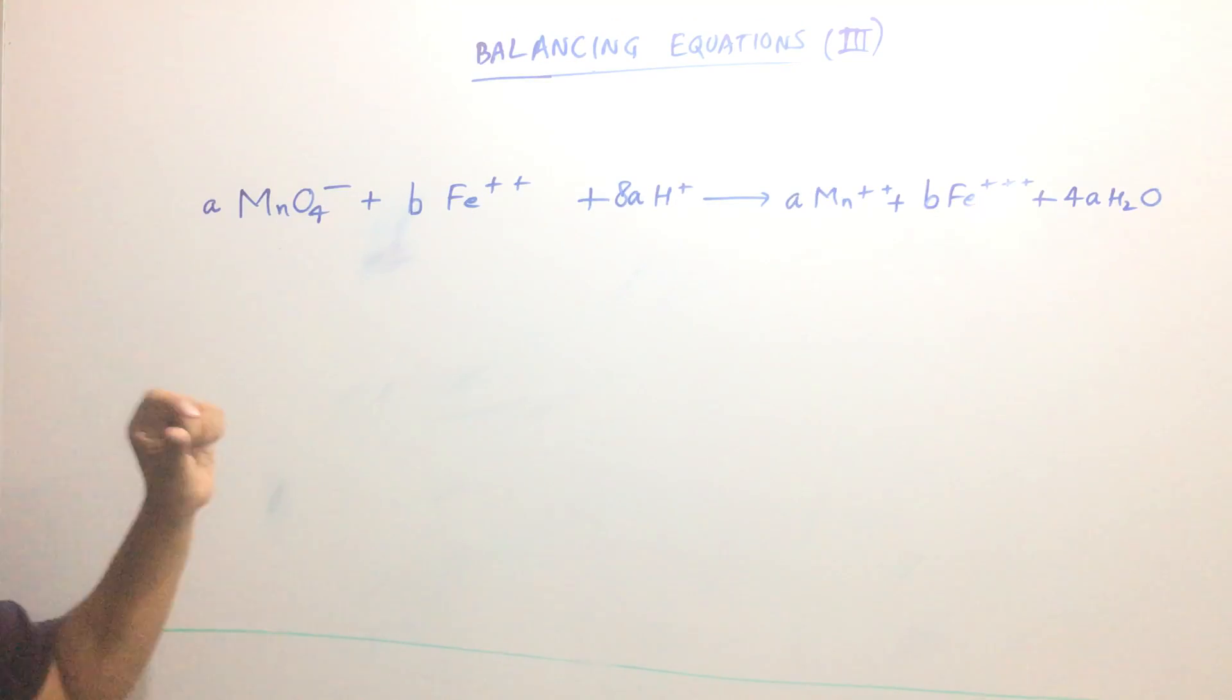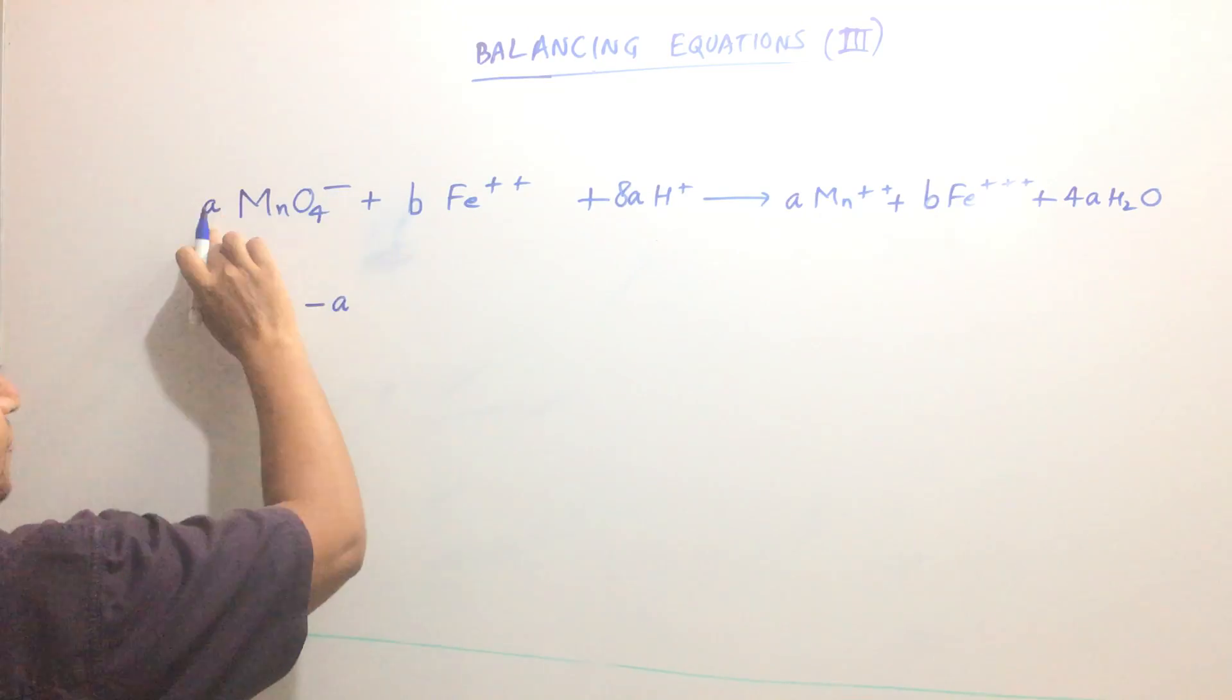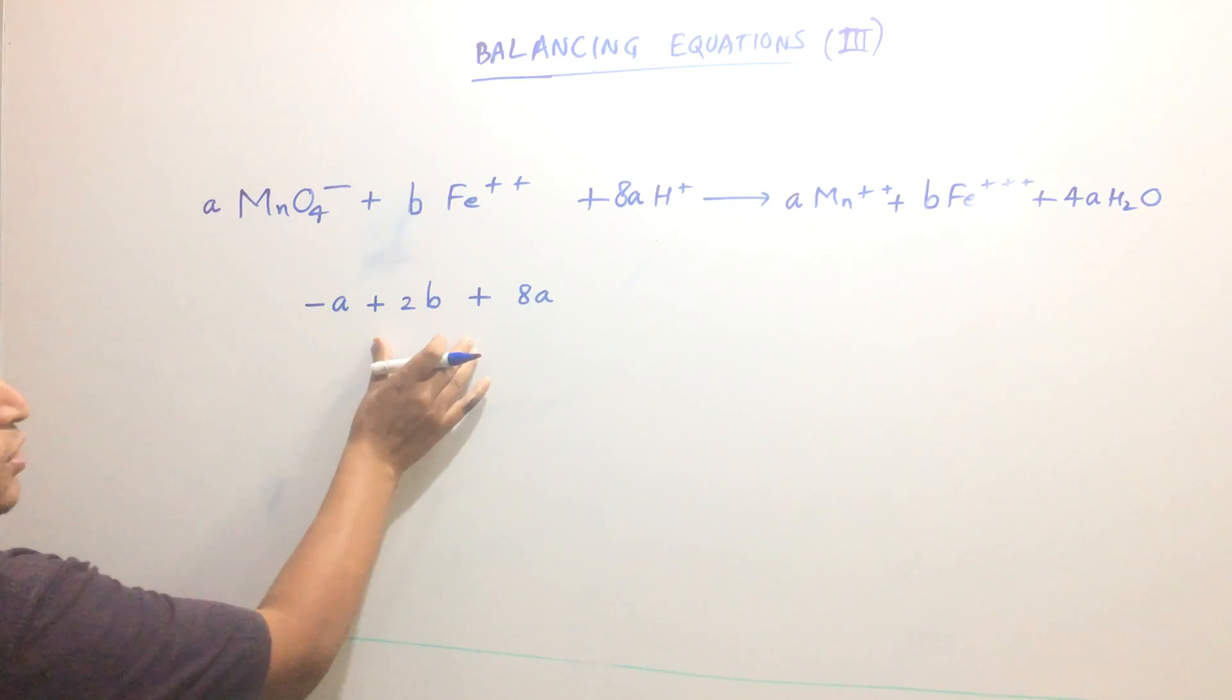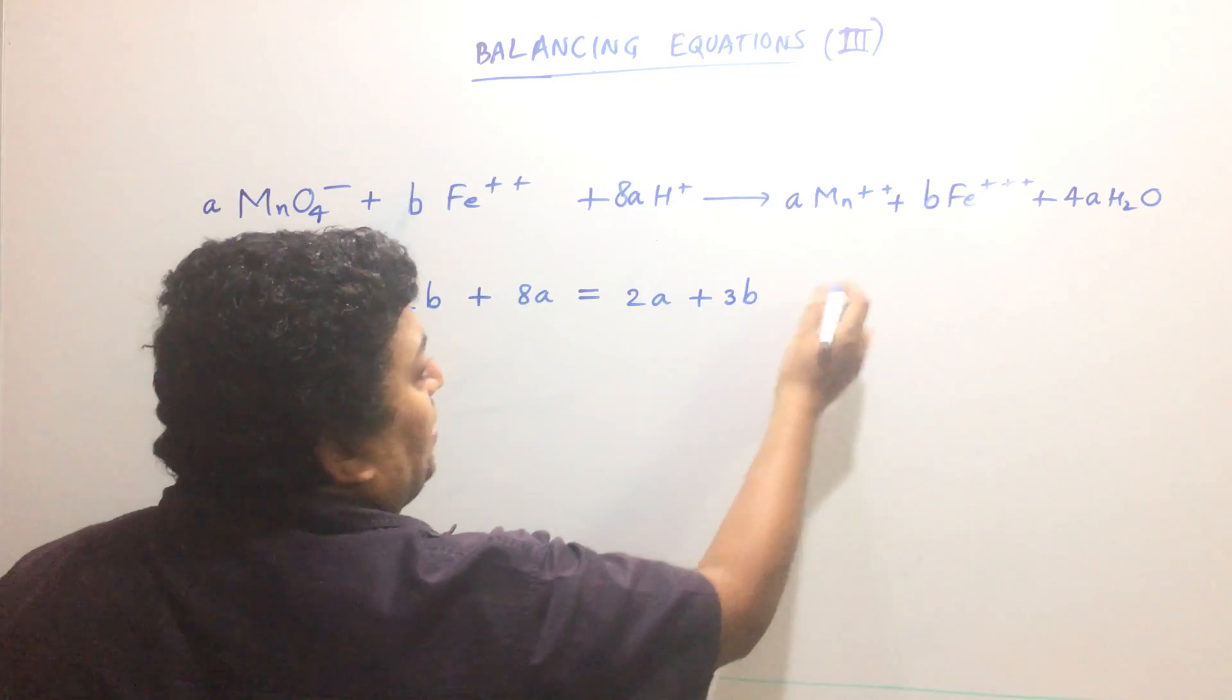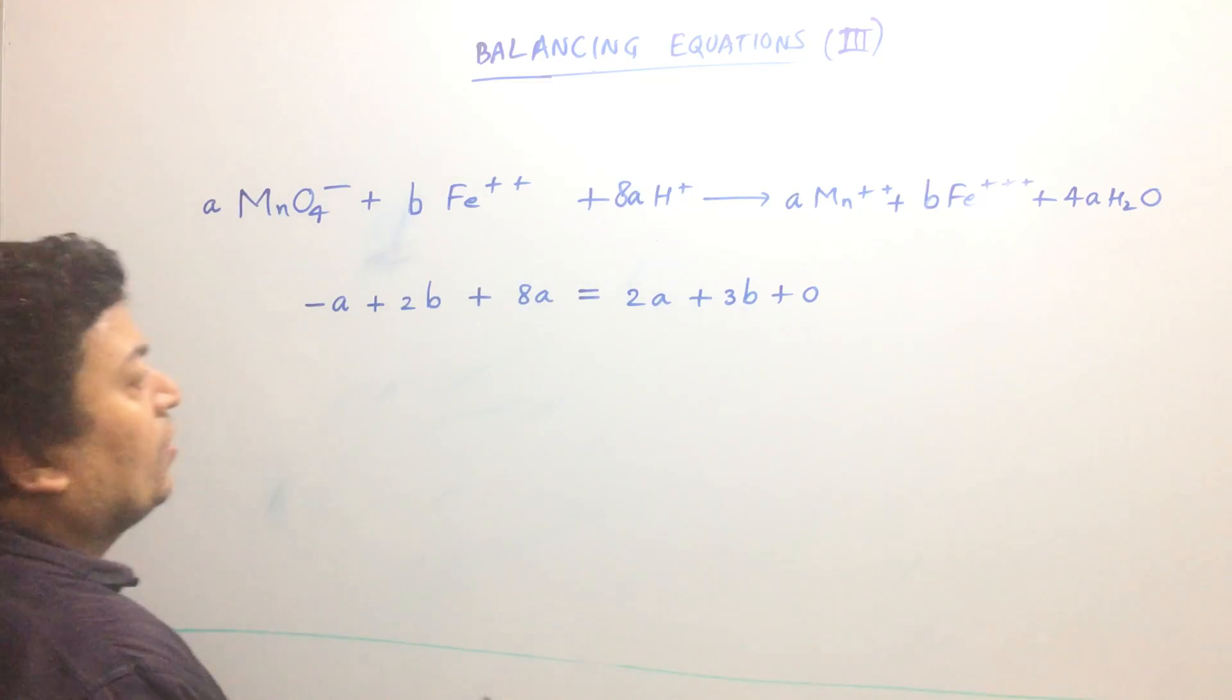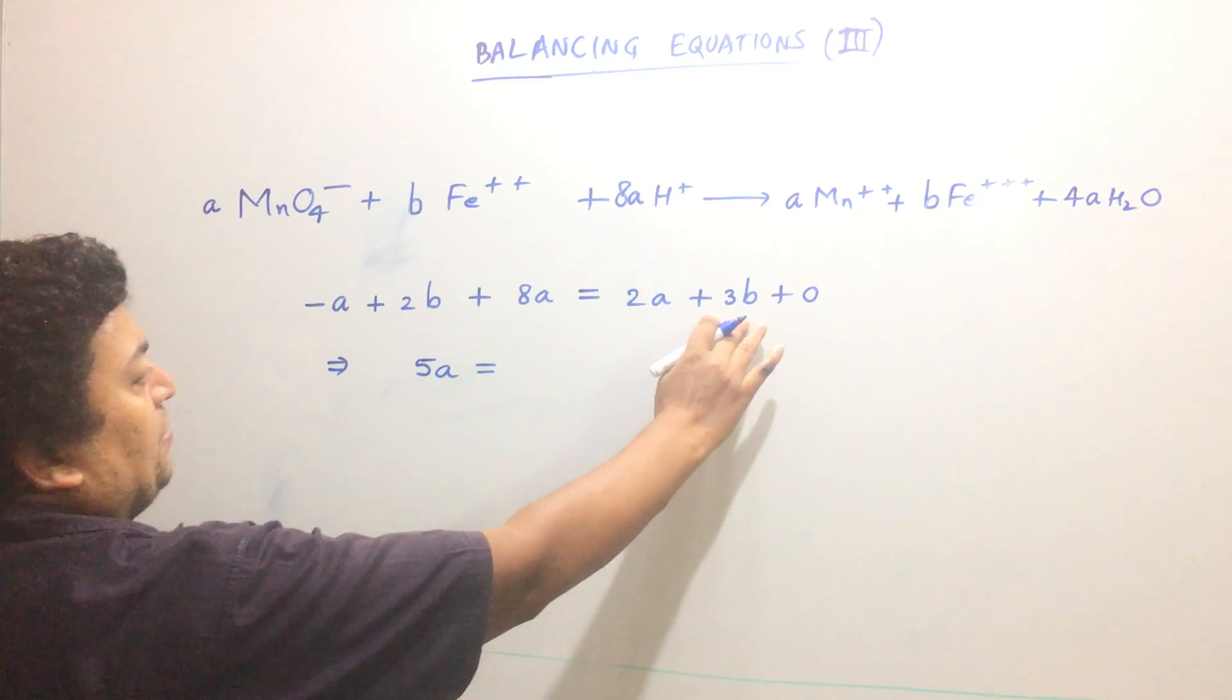Now we will balance the charge. This side: minus A (negative charge), plus 2B (positive charge), plus 8A. That must equal the total charge on this side also: 2A plus 3B (because one Fe atom has plus 3 charge), plus 0 (there is no charge in H2O). So this equation becomes 8A minus A minus 2A, so 5A equals 3B minus 2B equals B.